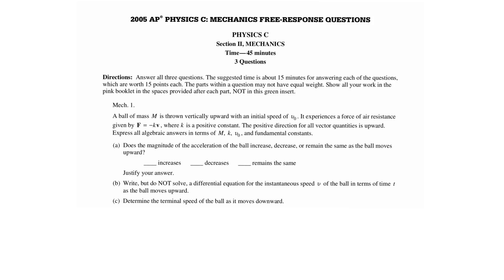This video is a solution to free response question number one from the 2005 AP Physics C Mechanics exam. A ball of mass M is thrown vertically upward with an initial speed of V0. It experiences a force of air resistance given by F equals minus K times V, where K is a positive constant. The positive direction for all vector quantities is upward. Express all algebraic answers in terms of M, K, V0, and fundamental constants.